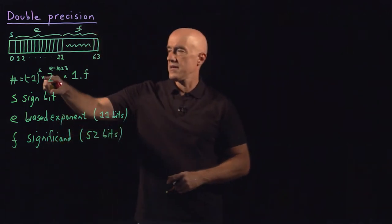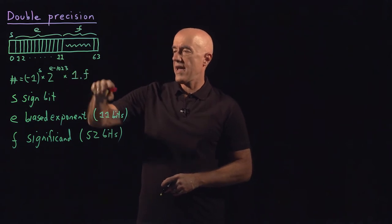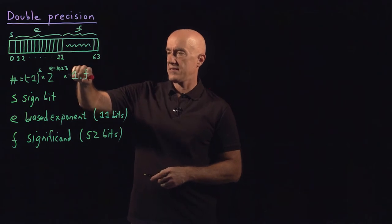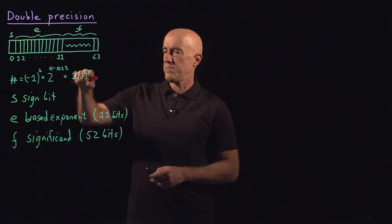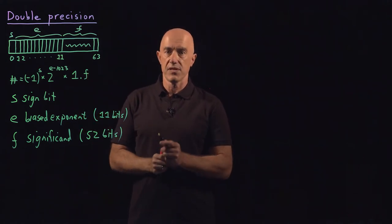That is one multiplied by one point F. Point is a binary point. And then F has 52 bits. So the last bit here would represent 2 to the minus 52.